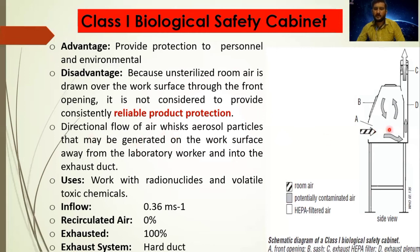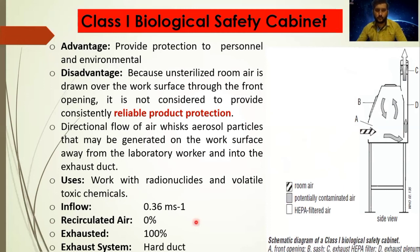The air flow within the class 1 cabinet means that aerosol particles and small droplets generated on the product move with the air into the plenum. From the plenum, after filtering through the HEPA filter installed in the exhaust, fresh decontaminated air enters the environment. So the aerosol particles are not harmful to the environment and user. Class 1 biological safety cabinet can be used for radionuclides and volatile toxic chemicals. The recirculated air is 0% — once air passes through the cabinet, it does not return; 100% of the air is exhausted.